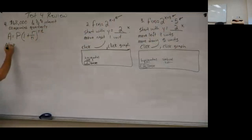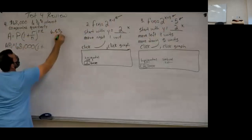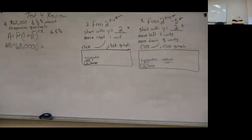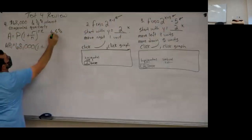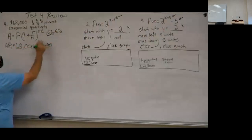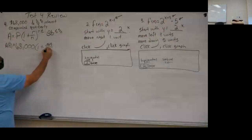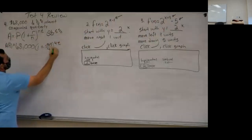We know it's A(T) because T is the variable. P is our starting amount of $68,000. R is 6.5%, which becomes 0.065 as a decimal. N is 4 because it's compounded quarterly. So you get 68,000 times (1 plus 0.065 over 4) raised to the 4T. Math Lab wants you to simplify the parentheses: 1 plus 0.065 over 4 equals 1.01625, giving us 68,000 times 1.01625 raised to the 4T.